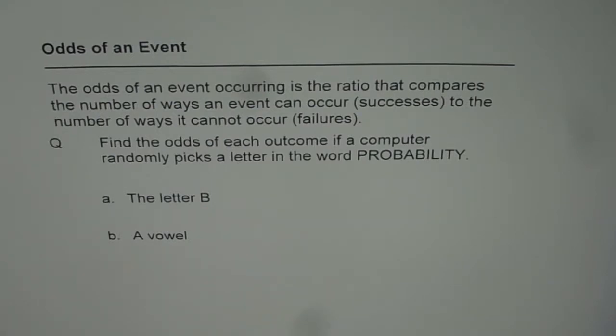to the number of ways it cannot occur. So it is basically a ratio of favorable to unfavorable, not the total. That is how odds of an event is separate or different from probability.